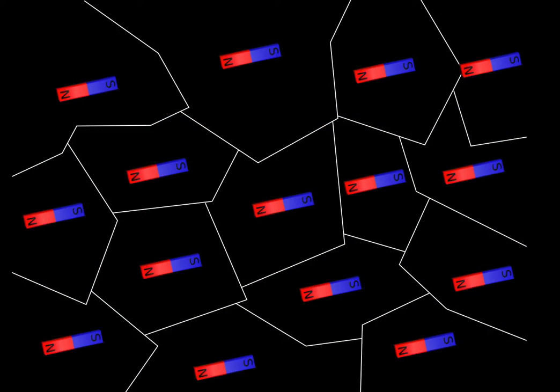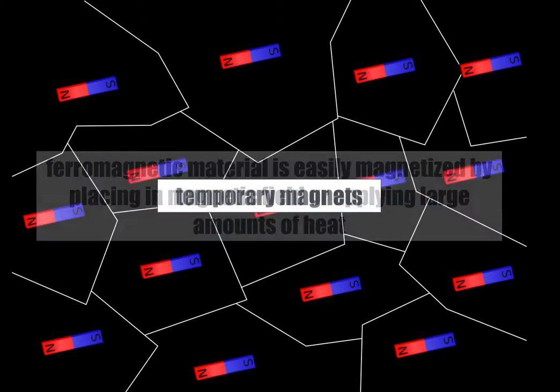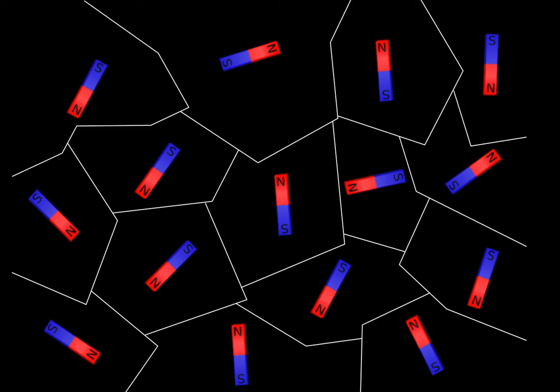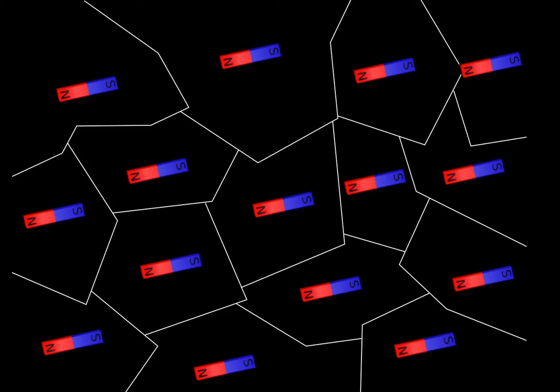A magnet will have magnetic domains aligned in one direction. In class, I showed a magnet and attached a metal paperclip. A metal paperclip initially has domains that are randomly aligned — it doesn't have any initial magnetic properties. But when I attached the paperclip to a magnet, the domains shifted and aligned. I was then able to attach other paperclips to that first paperclip.